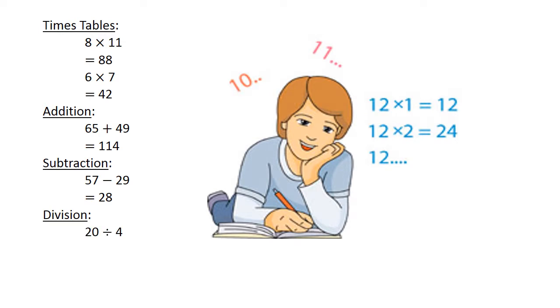Division. 20 divided by 4 is equal to 5.